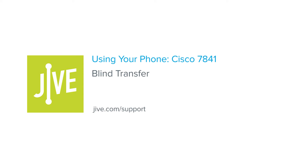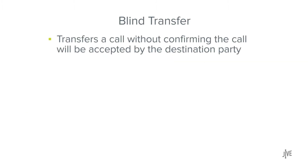In this video, you will learn how to perform a blind transfer on a Cisco 7841 phone. A blind transfer routes a call to a third party. The original call is then ended, and no confirmation is made to determine whether the transferred call is answered or if the number is busy.